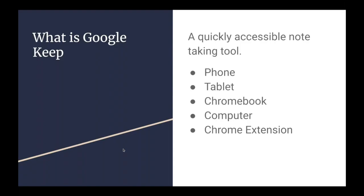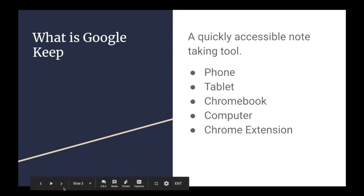Google Keep is an accessible note-taking tool, very similar to the type of note-taking tool you get when you buy an iPhone, where you have an application called Notes where you can put little notes and keep them on your phone. But this does much more than those applications can do, because it integrates with all of the other Google applications — and that's what makes it so remarkable. You can have it on a phone, a tablet, a Chromebook, or a computer, and it can be used as a Chrome extension. When you log in and take a note in any one of these places, it's accessible from any other place.